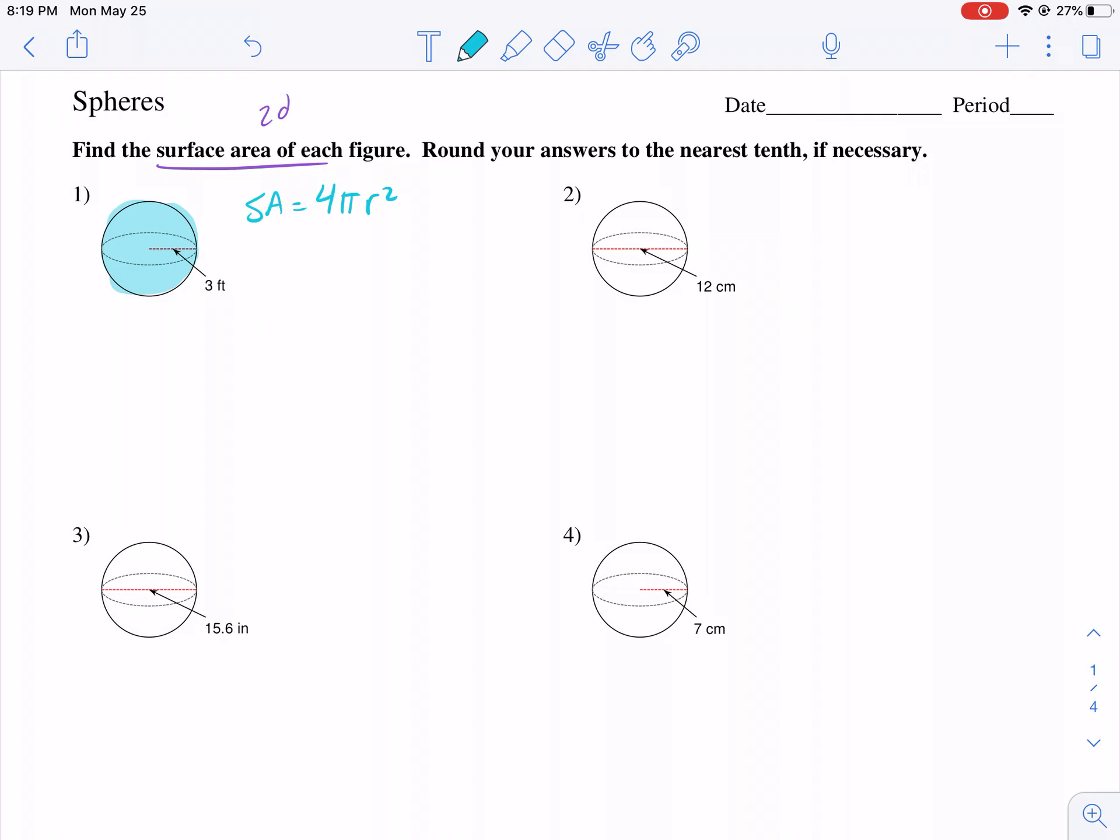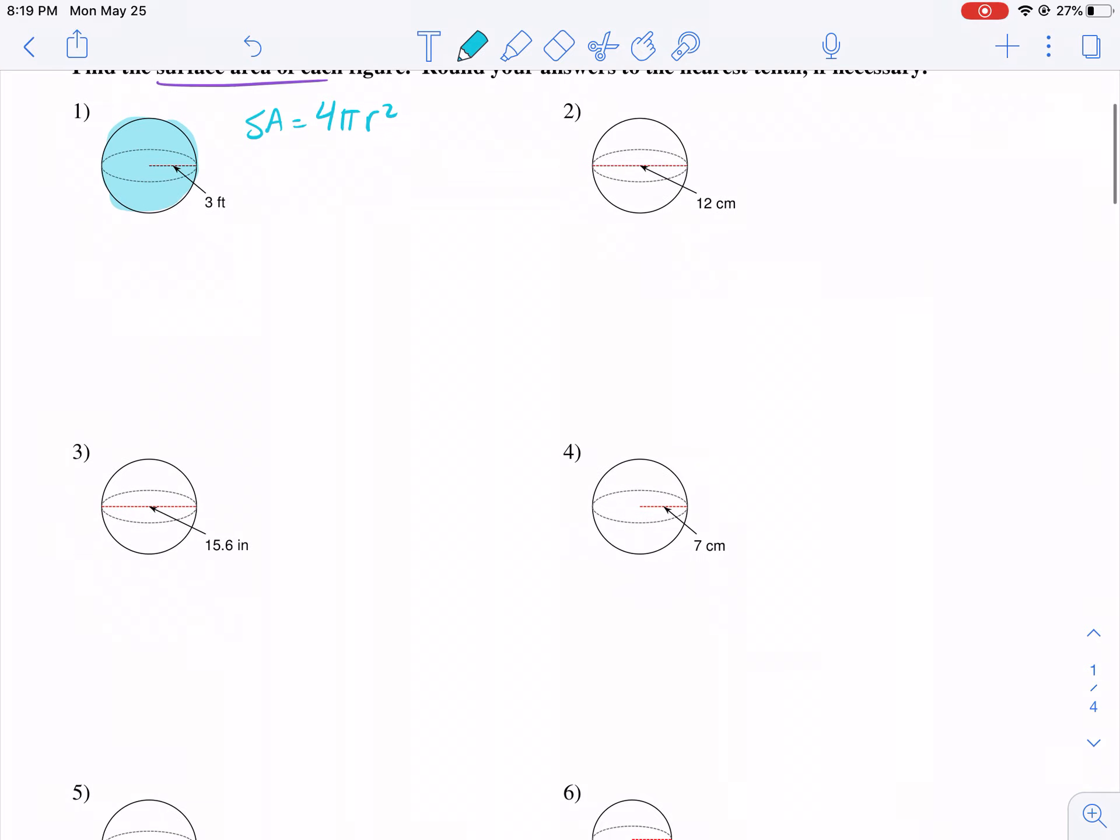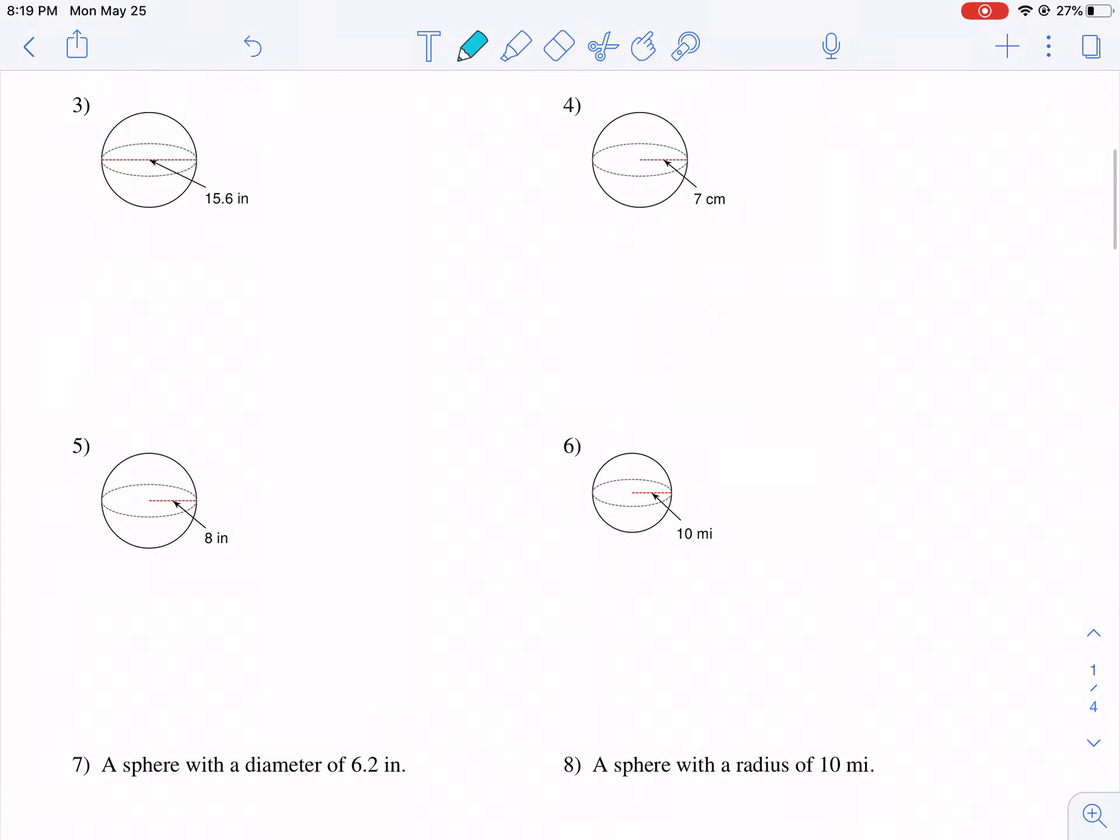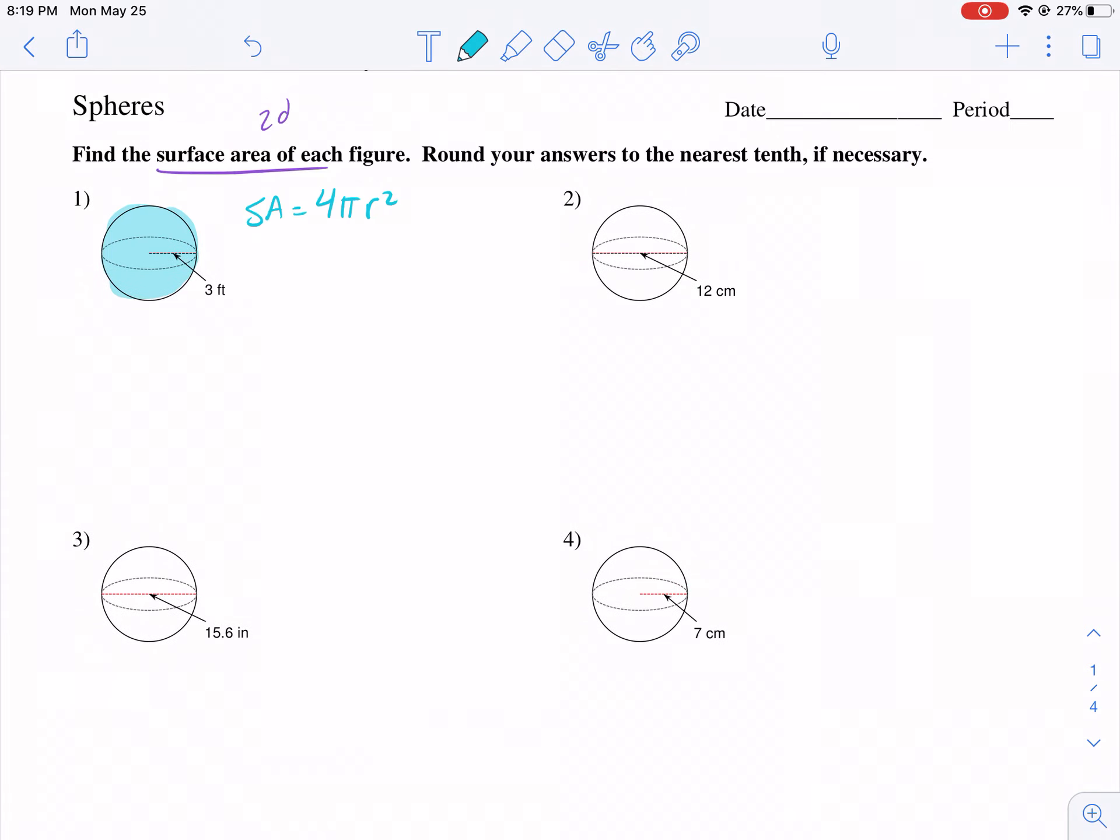We just need to identify our radius. Each one of these problems, some of them give you the radius, some of them give you the diameter. If you get the diameter, you want to make sure you divide by two. So we'll go ahead and start with number one and we'll do number two.